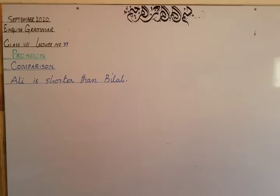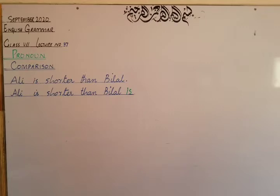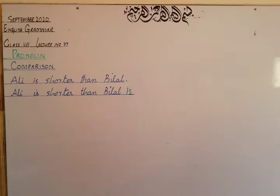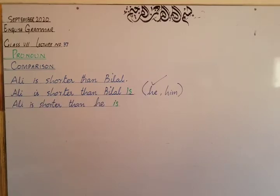To understand this sentence further, let me write it in another way: Ali is shorter than Bilal is. Here Ali is used as a subject, and his comparison is with Bilal as a subject. Now I need to use a pronoun for Bilal. From 'Bilal is,' it is clear that I will use a subjective pronoun. So: Ali is shorter than he is.